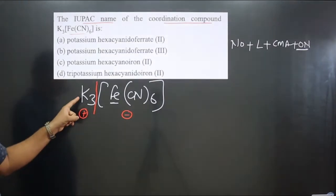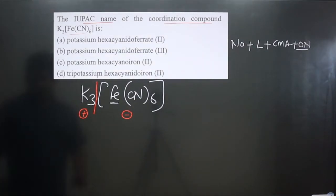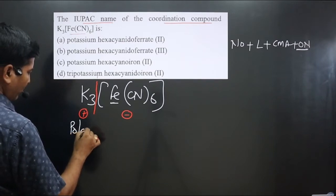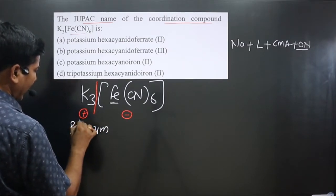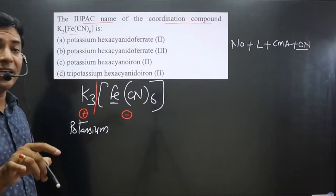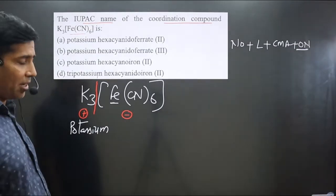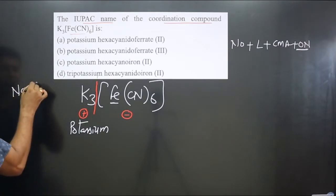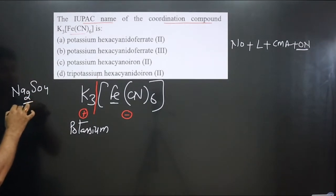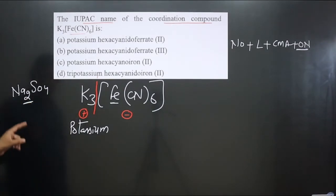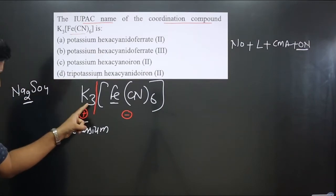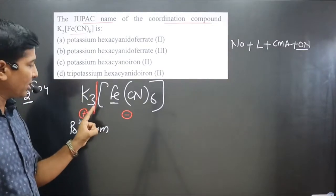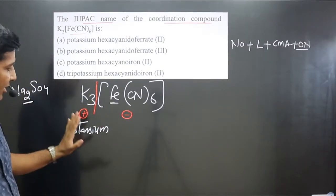The cationic portion is the counter ion — potassium. Keep in mind you do not mention tri-potassium; it is only potassium. Whatever number of cations are present, we do not focus on that number. For example, just as sodium sulfate is not called disodium sulfate even though two sodiums balance the charge, here we are getting three by balancing the charge but we use only the common name — potassium.